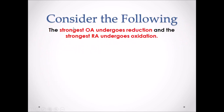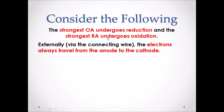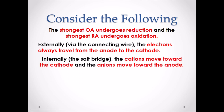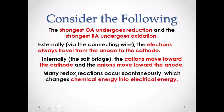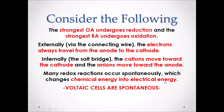Key principles to consider: the strongest oxidizing agent will always undergo reduction, and the strongest reducing agent will always undergo oxidation. Externally, through the connecting wire, electrons always travel from the anode to the cathode. Internally, via the salt bridge, cations move towards the cathode and anions move towards the anode. Many redox reactions occur spontaneously, changing chemical energy into electrical energy — this is the purpose of a voltaic cell: to produce electricity. Therefore, voltaic cells are always spontaneous.